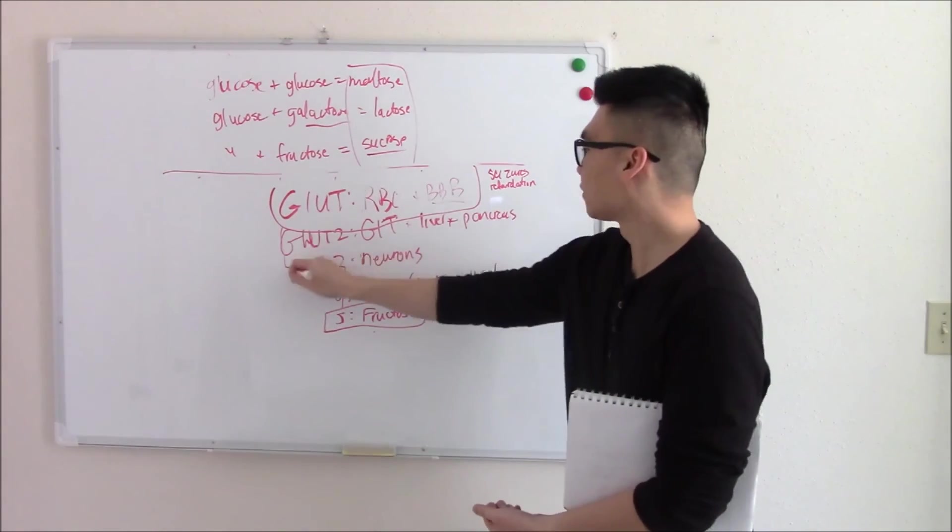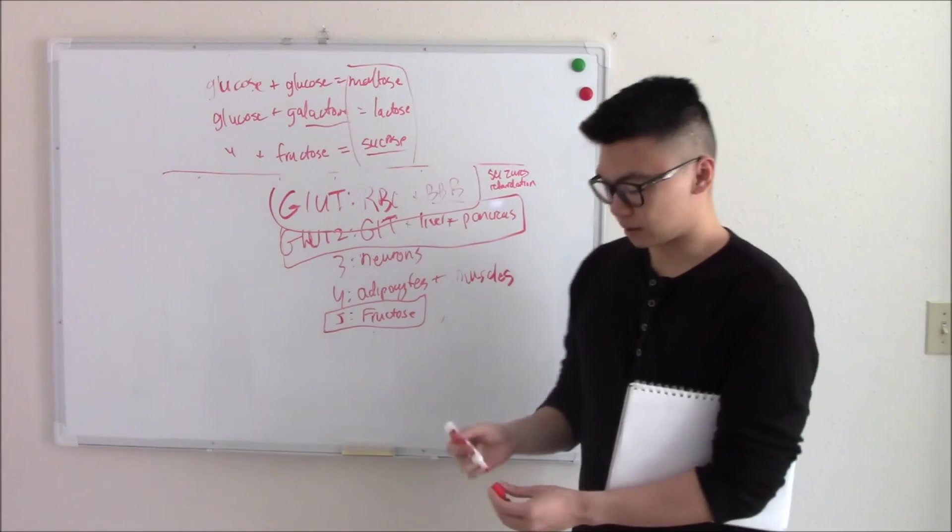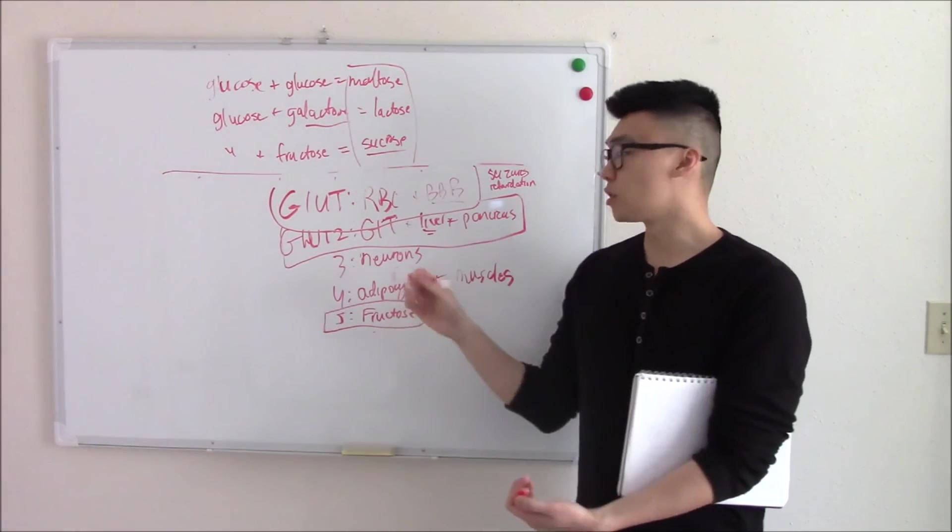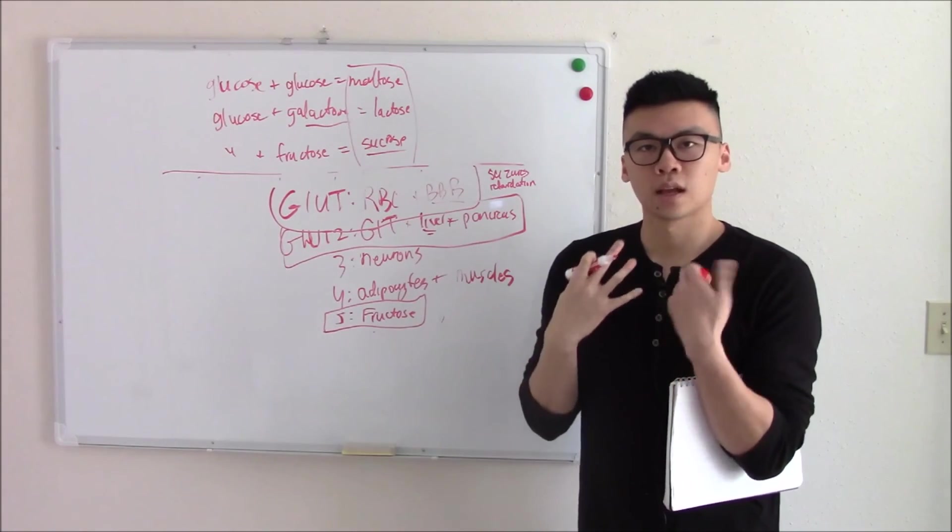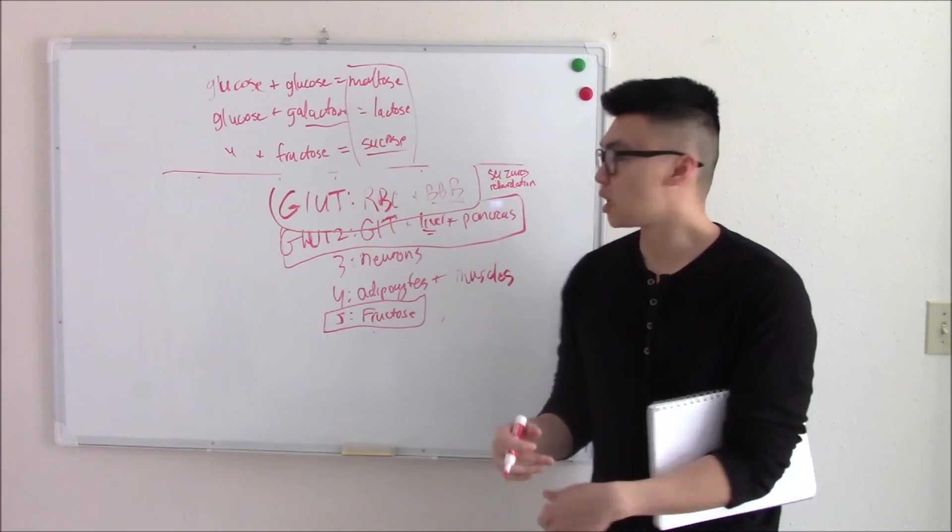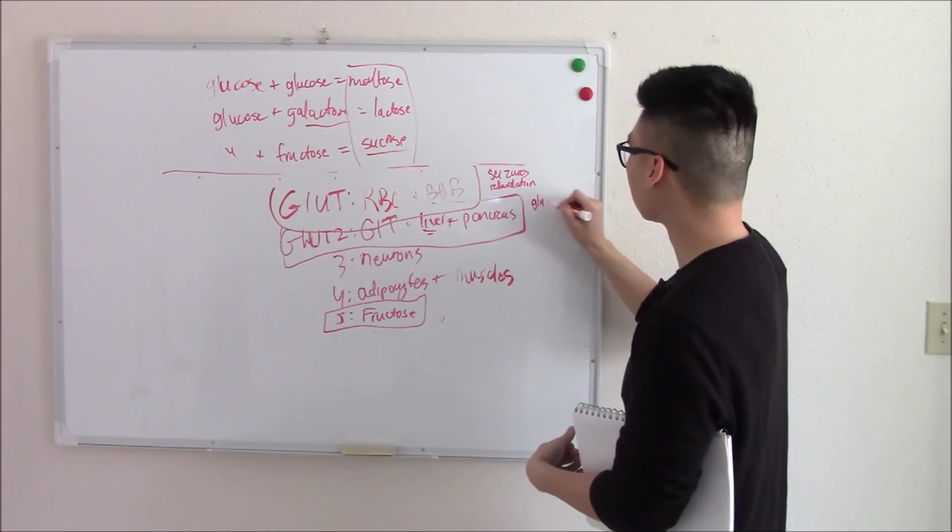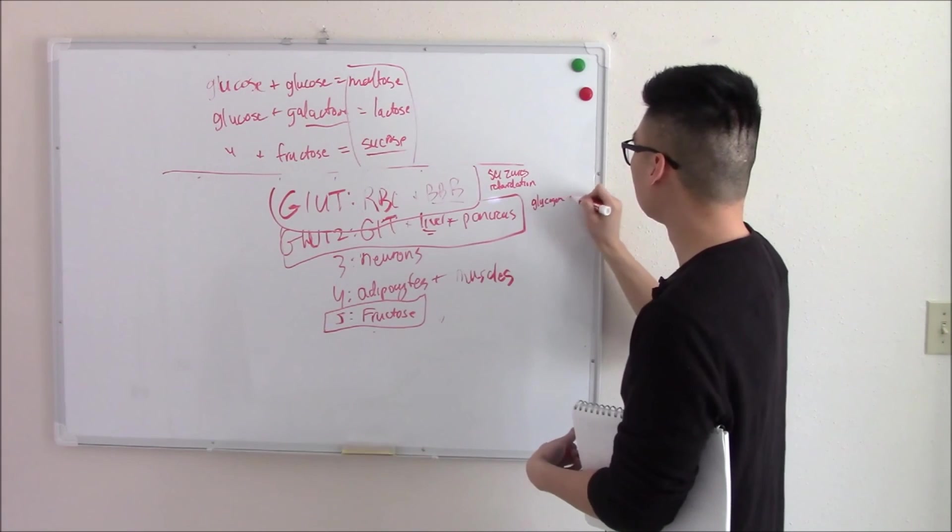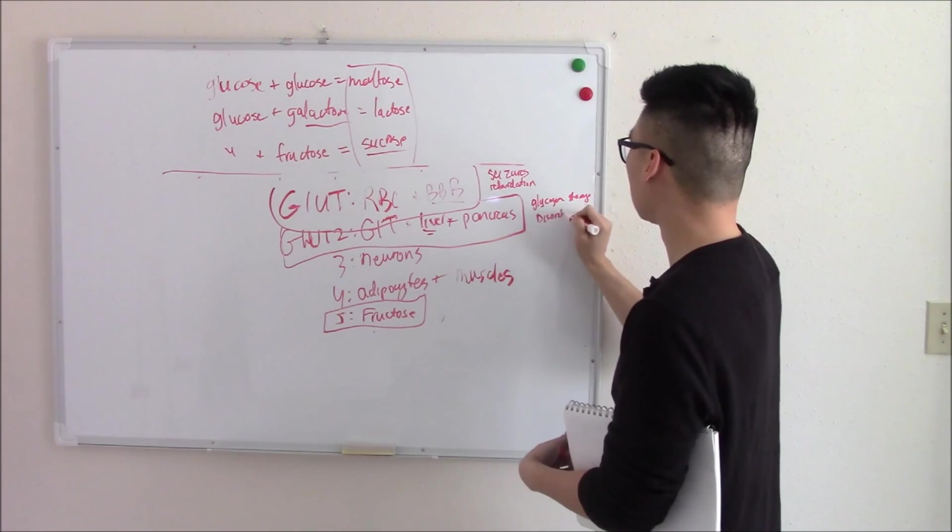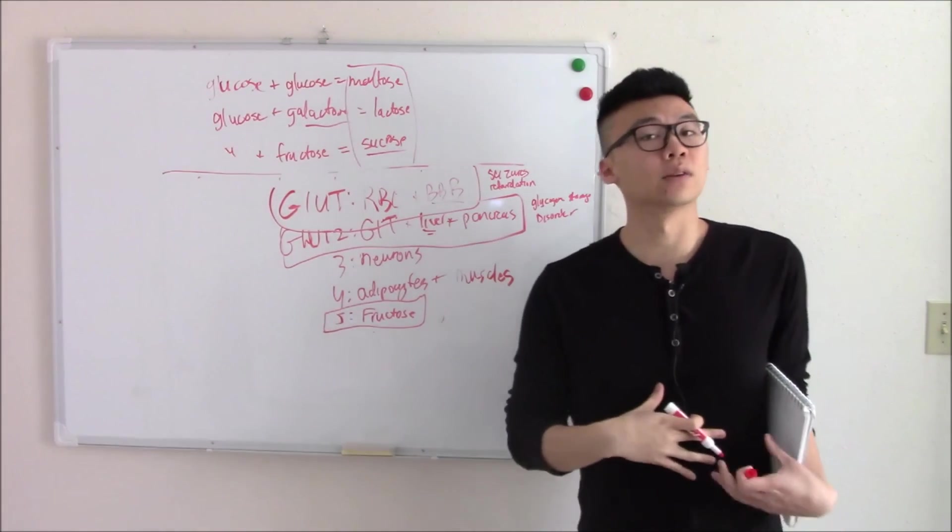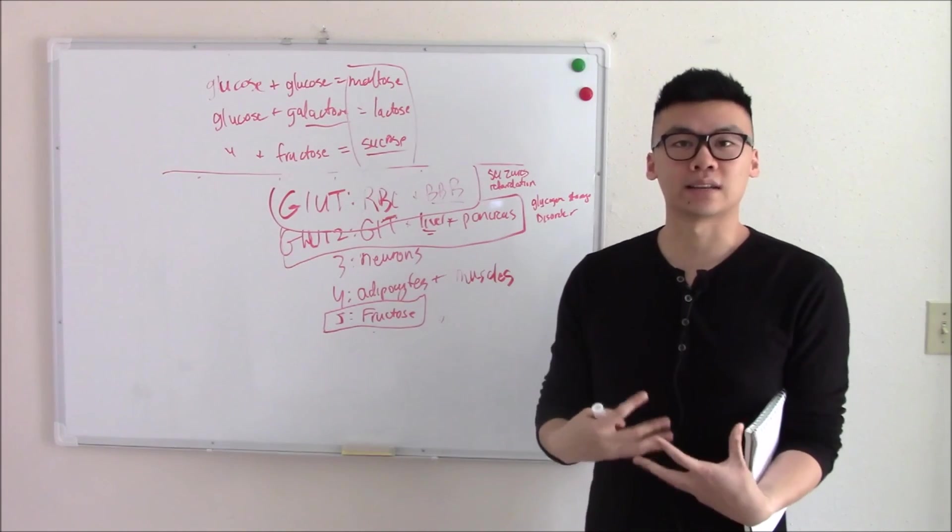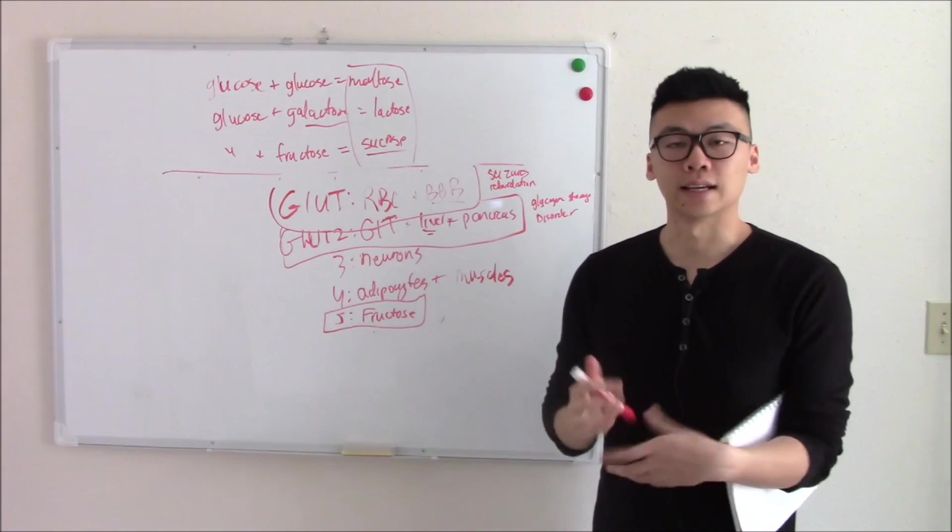GLUT 2 deficiency. This is important, especially in your liver. Recall that GLUT is bi-directional. So in GLUT 2 deficiency, you can take it up, make glycogen, but you can't break it and release it. So this is basically a glycogen storage disease. So you're going to have hepatomegaly. You're going to have a big liver. And you're also going to have fasting hypoglycemia because you can't break down that glycogen and release it. You can only take it up.